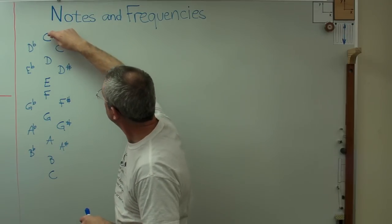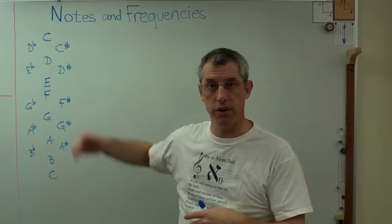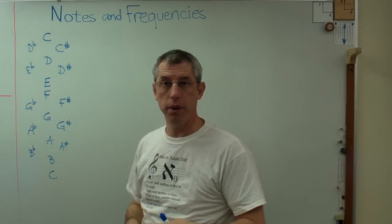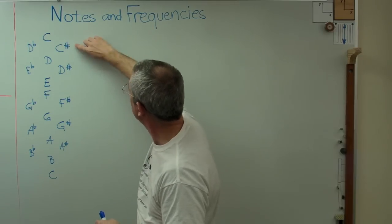Now, so I started here at C. So C, D, E, F, G, A, B, C. I got through one cycle there. And also to the sides here, I wrote some other notes. Here's C sharp, D sharp, F sharp, G sharp, and A sharp. That little checkerboard sign there means sharp. It means we've raised the pitch a little bit.